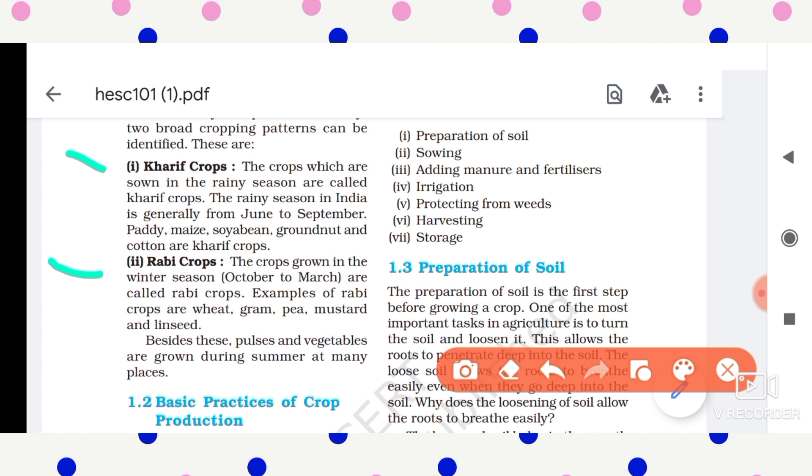The rabi crops are sown in the month of October and harvested in the month of March in the winter season. Examples of rabi crops are wheat, gram, pea, mustard, and linseed. These are some of the examples of rabi crops.